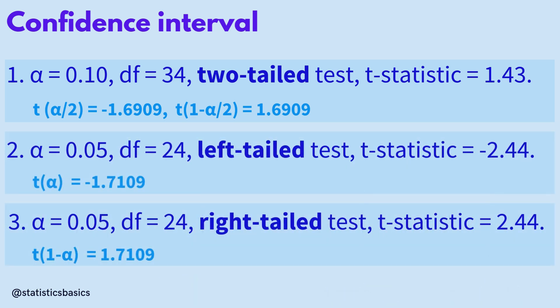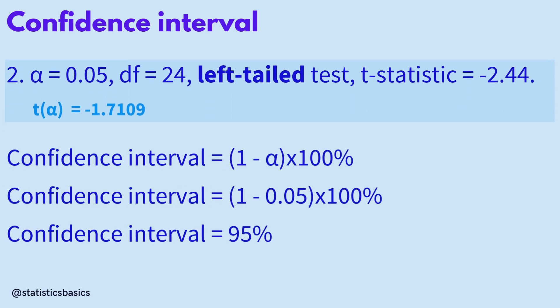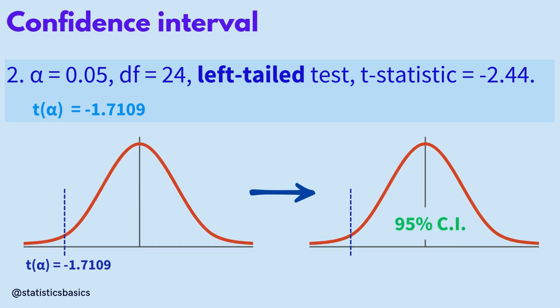In the second case, a significance level of 0.05 corresponds to a 95% confidence interval. For a left-tailed test, this will be a one-sided 95% confidence interval. To construct this confidence bound, we calculate the lower limit by subtracting the margin of error from the point estimate. Since this is a left-tailed confidence interval, the upper limit extends towards infinity.